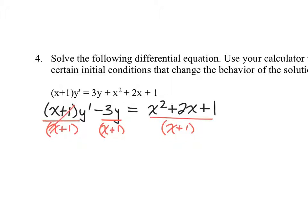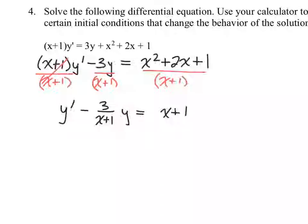So we'll have y prime minus three over x plus one y. Now, the right-hand side simplifies because it's factorable. So you're looking at just an x plus one. It's kind of nice. Ultimately, what we need out of this is the p of x, which is the coefficient of the y.